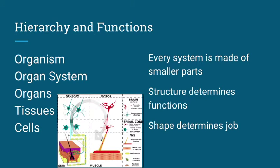So to review the hierarchy: we start at the organism level. An organism is made up of a bunch of organ systems. Organ systems are made up of organs. Organs are made up of tissues. And tissues are just a collection of cells that all do a specific job. Each system is made up of smaller parts.